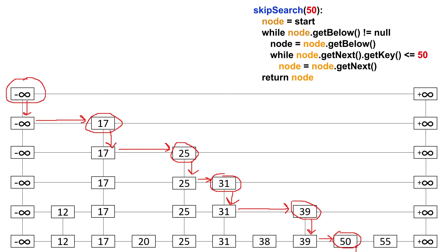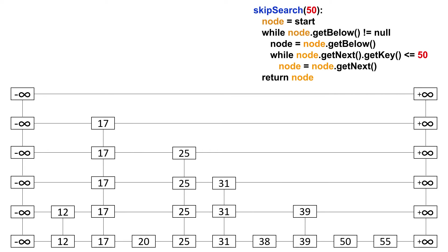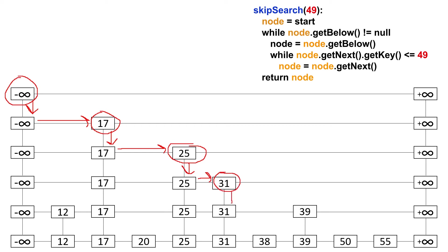There are a couple of edge cases. What if the key we're searching for doesn't exist? Let's say we're searching for 49, which doesn't exist on the skip list. We start at the top left again, always try to drop down first — we can because the below reference is not null. Then we scan forward, stop at positive infinity since it's greater than 49, drop down a level, go forward, stop, go down, go forward again, stop, go down, go forward again. Now we can't go forward because 50 is greater than 49.